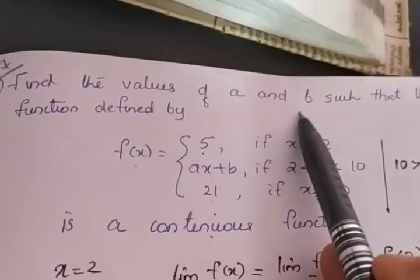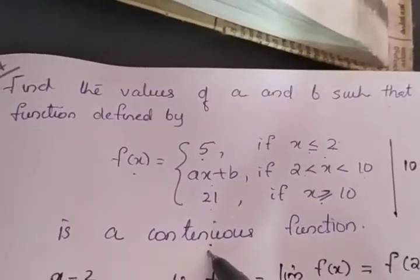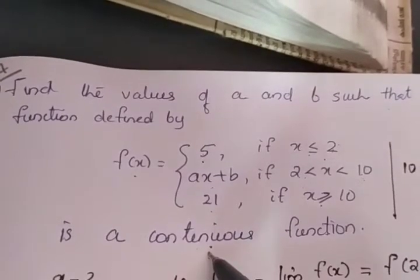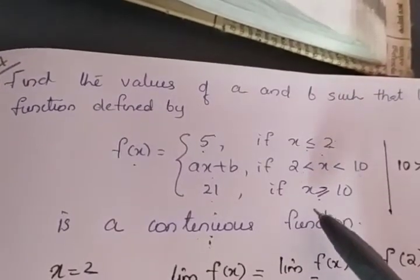So we have to find the value of a and b and the given condition is function is continuous. If it is a continuous function, it is continuous at each and every point. We will give the stress to the points 2 and 10 where the function is break up.